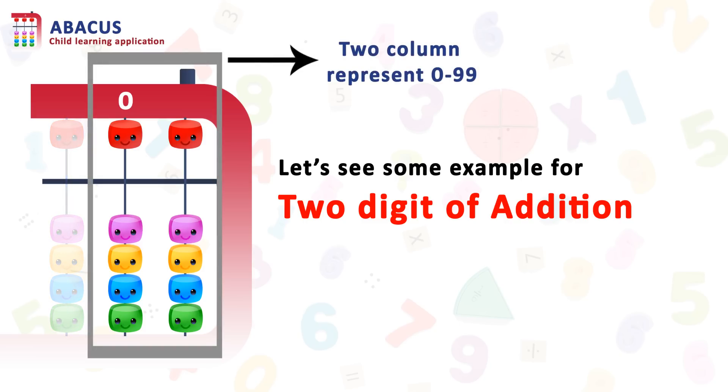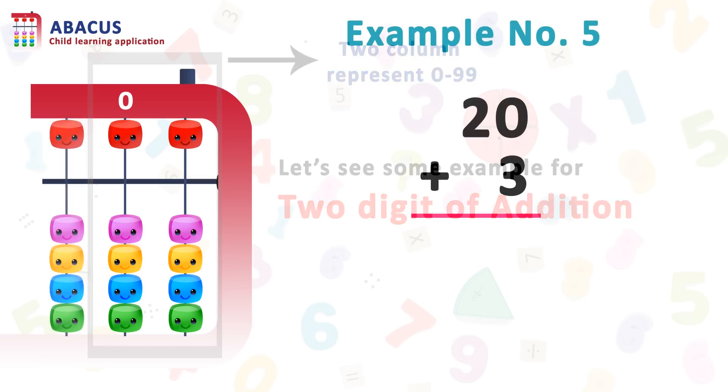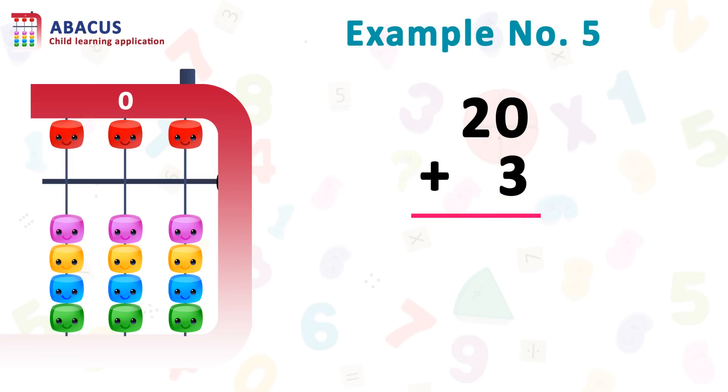Two columns represent the value of 0 to 99. Here is example number 5: 20 plus 3. I repeat, 20 plus 3.